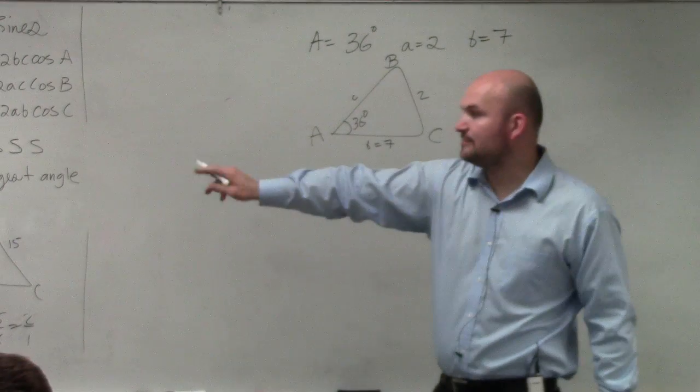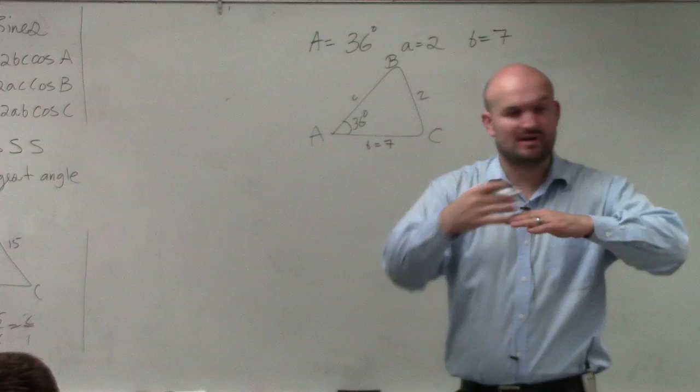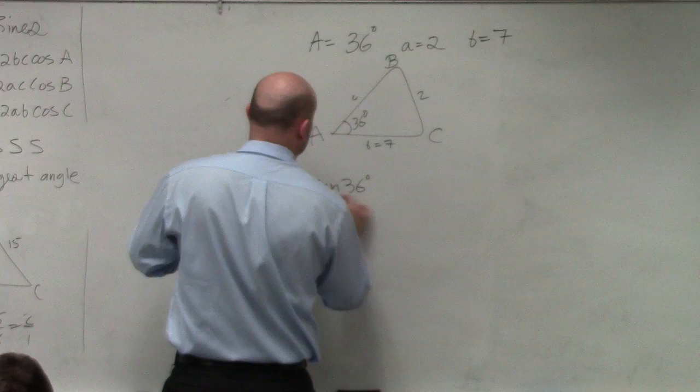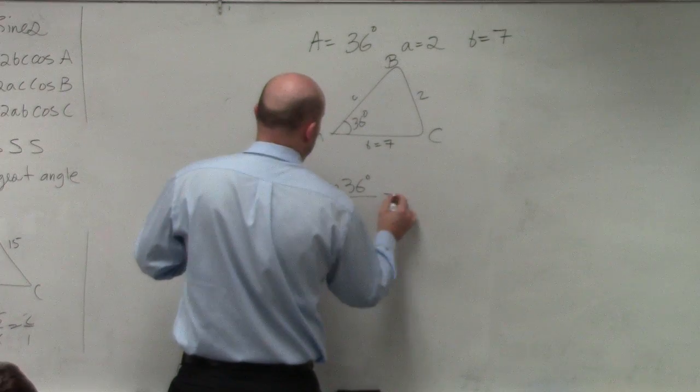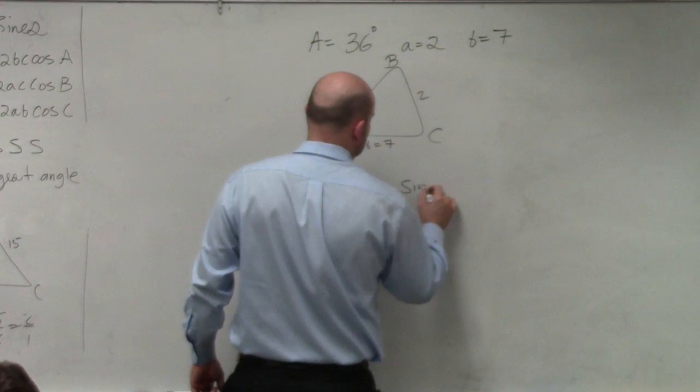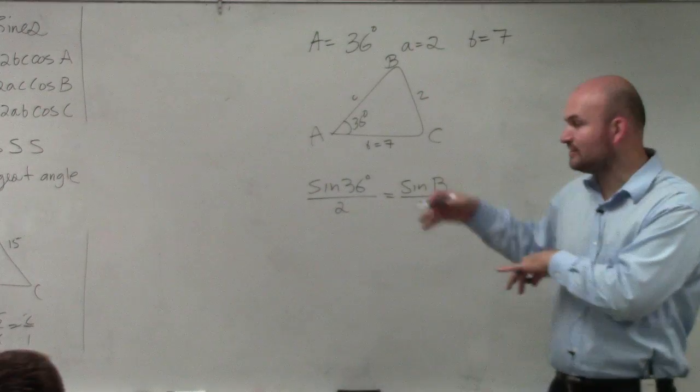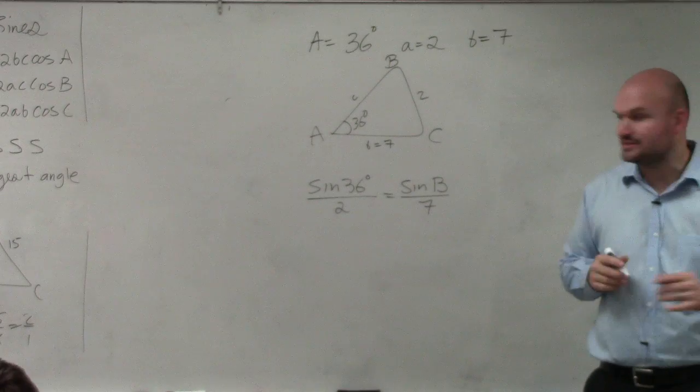So when we're using the ambiguous case, I prefer to flip the ratio, so my angles are up top. So I'd say sine of 36 degrees all over 2 is equal to the sine of B all over 7. If you want to use the ratio I did last time, that's perfectly fine. It just takes a little extra math to solve.